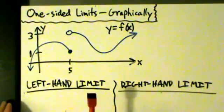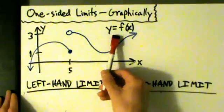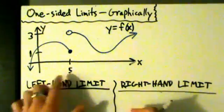So let's take a look at this example here. We have a function y equals f(x), and let's do one-sided limits at x equals 5.